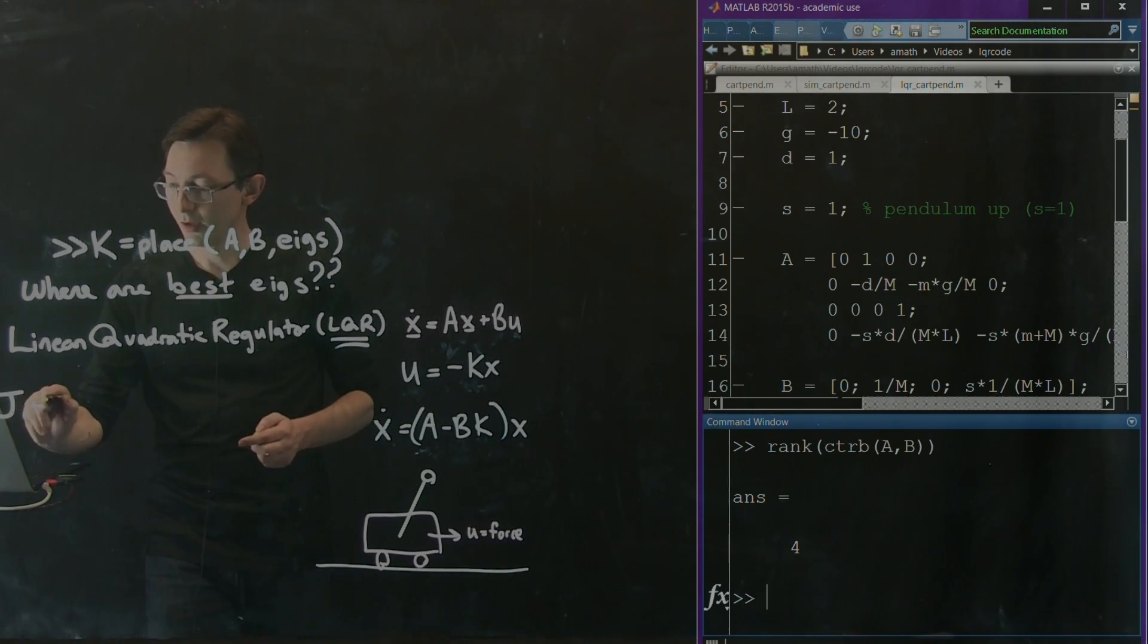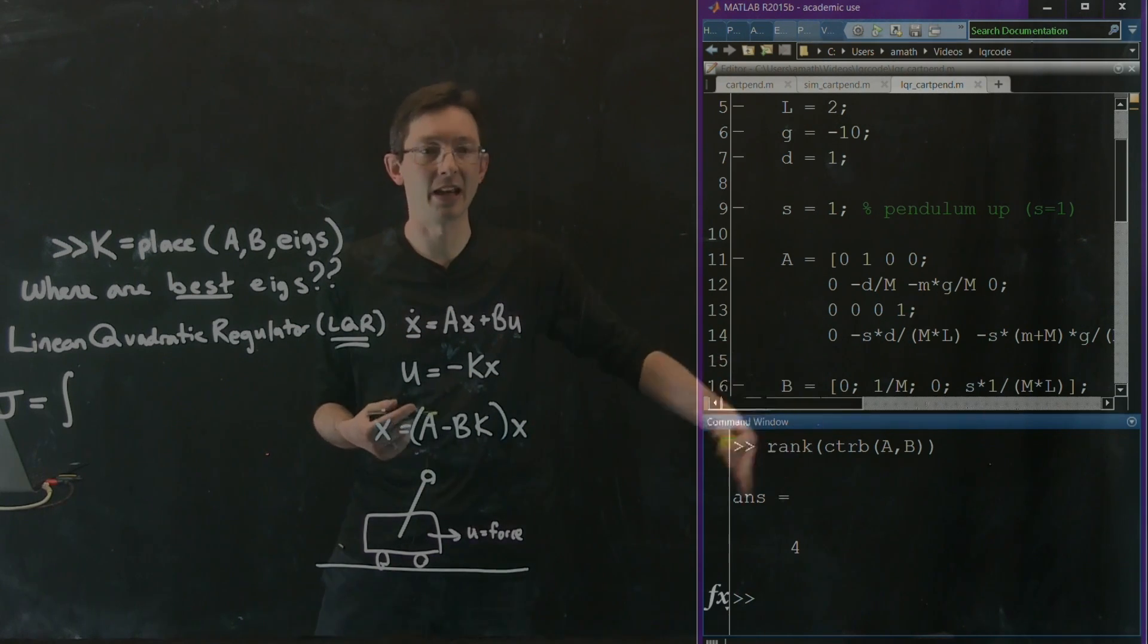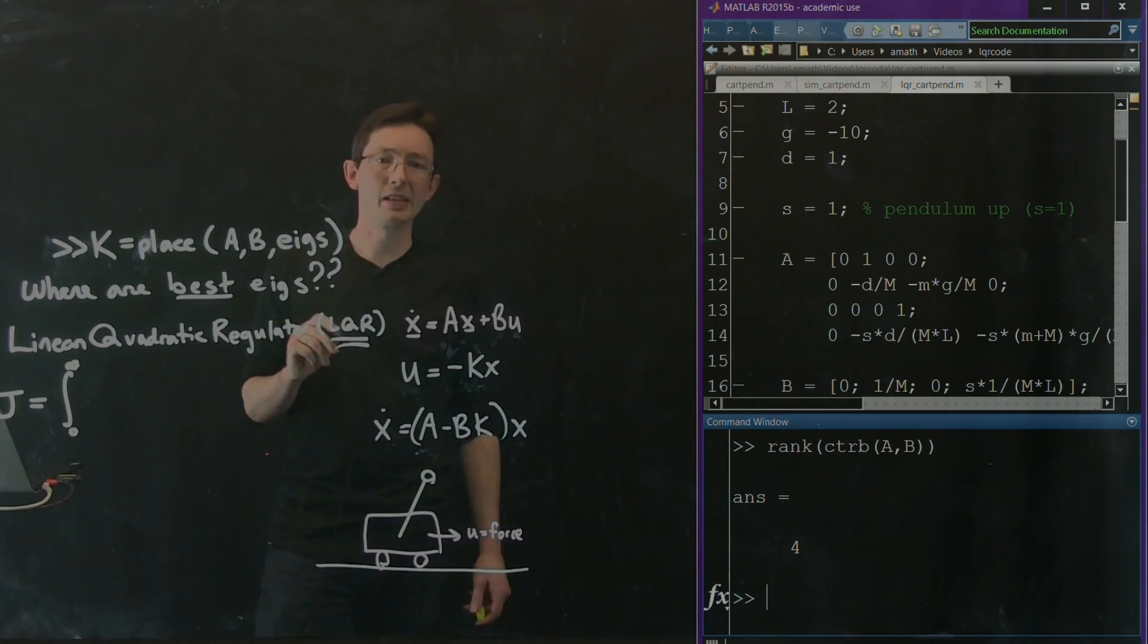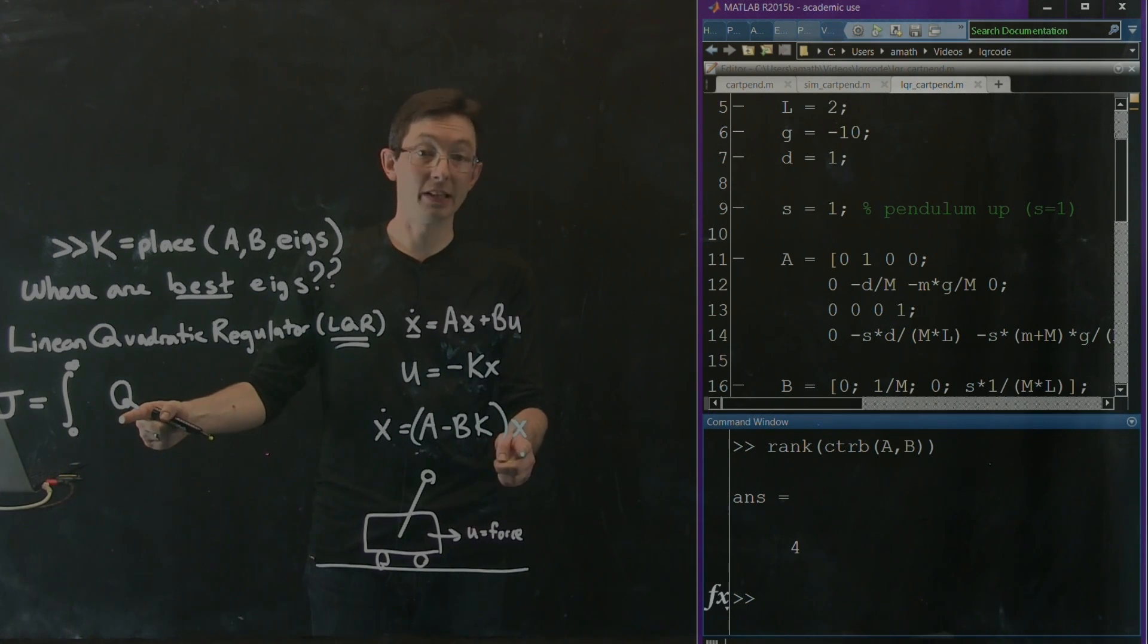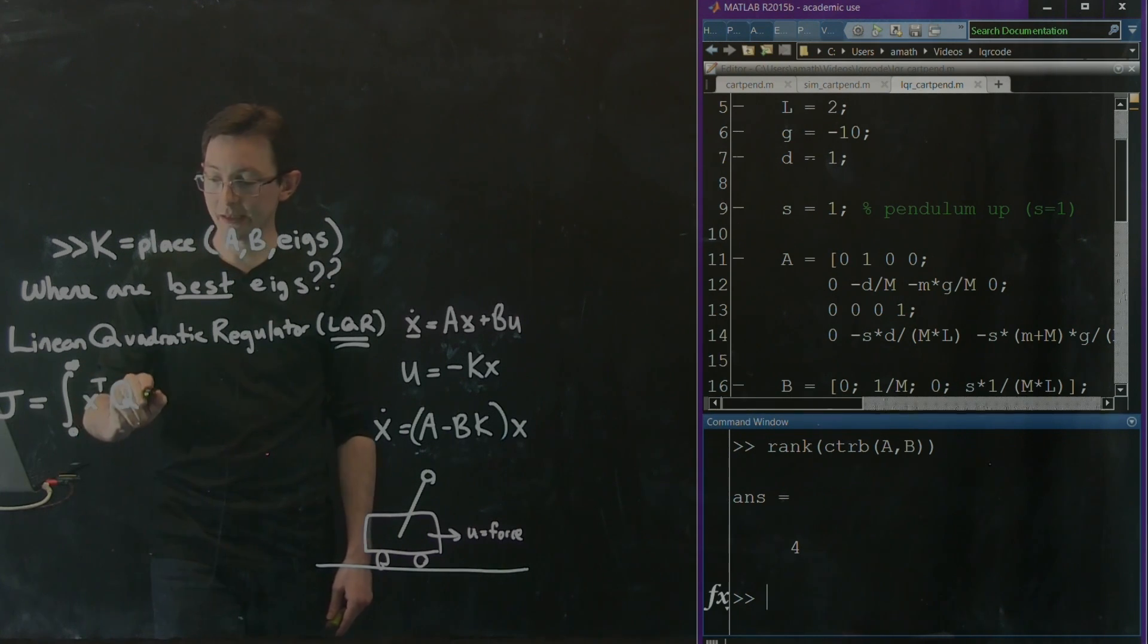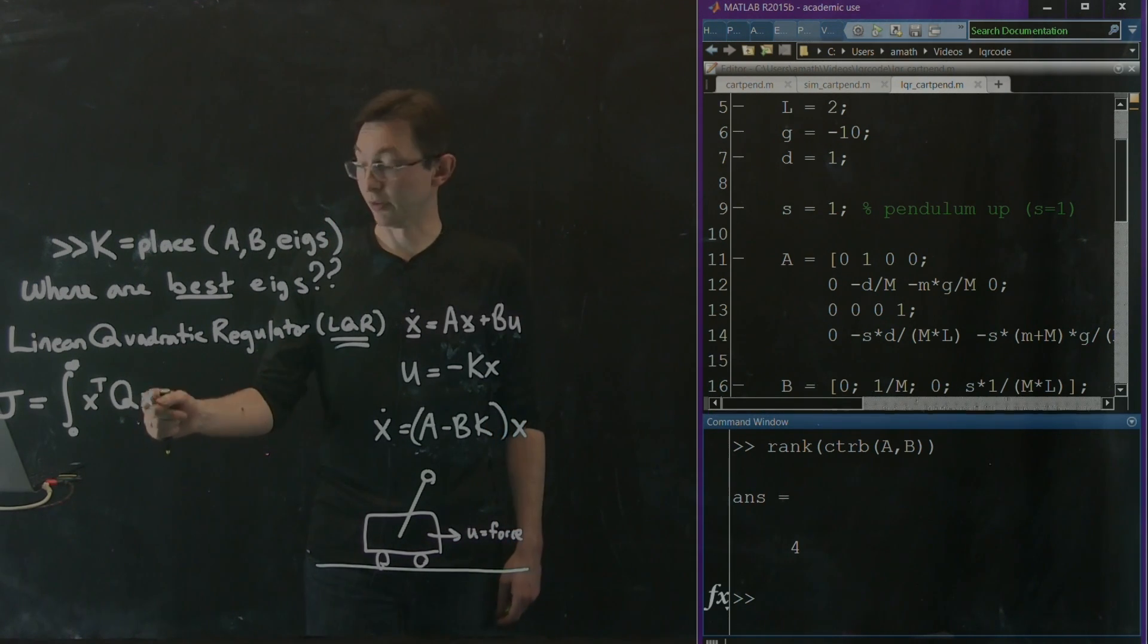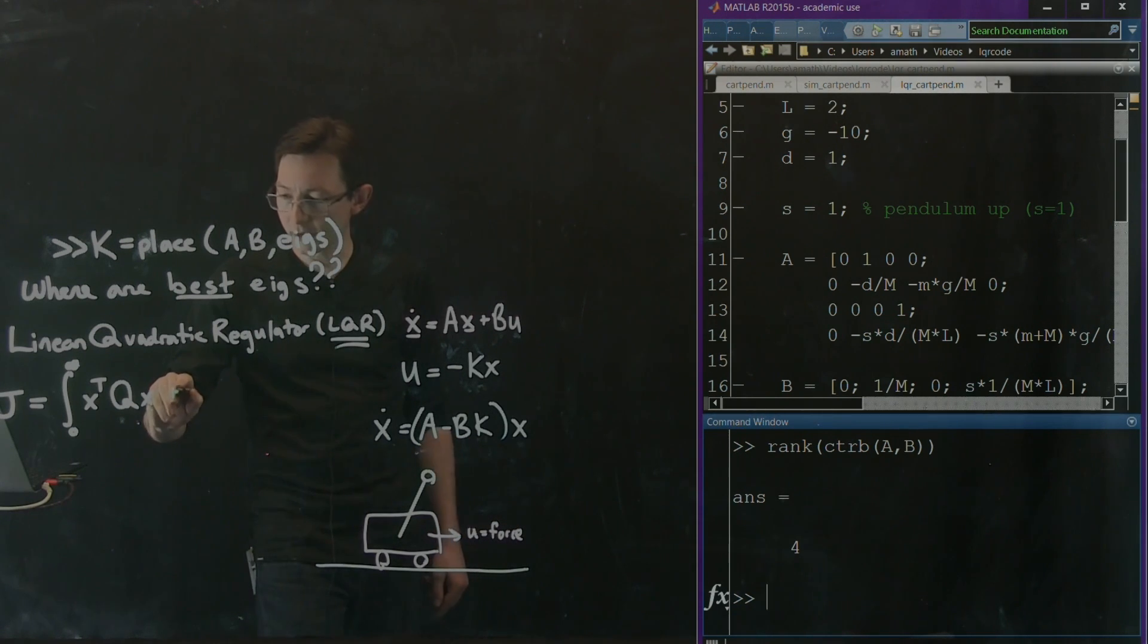So I'm going to build a cost function. It's going to be J equals the integral. Now I'm going to integrate from 0 to infinity, but really you could just integrate for a long time from 0 to 10 or 0 to 30 or whatever. So I'm going to integrate from 0 to infinity. And what I'm going to do is I'm going to develop a matrix Q that is going to tell me how bad of a penalty it is if X is not where I tell it to be. So this is an n by n matrix, in this case a 4 by 4 matrix. And I'm going to take X transpose Q X. I also have a similar term, U transpose R U.